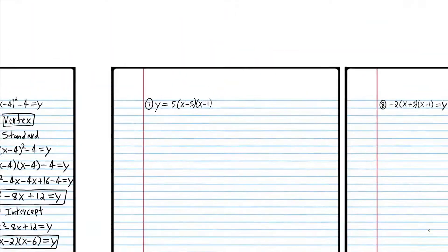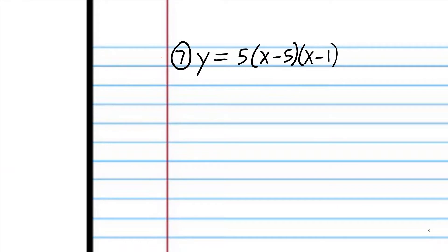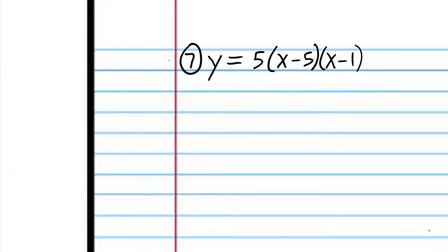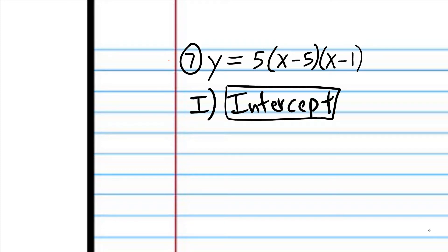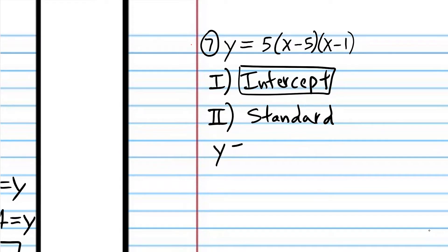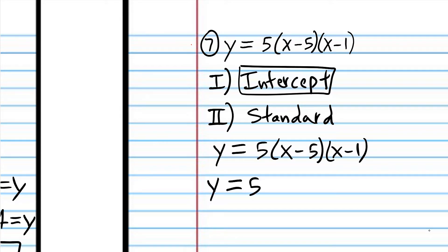Now we're going to start with intercept form and convert to standard form and then vertex form. Step one: we're going to identify the form it's already in — intercept form. Then we're going to convert to standard form using FOIL. The 5 is just going to stay out there. x times x is x squared, x times negative 1 is negative x.